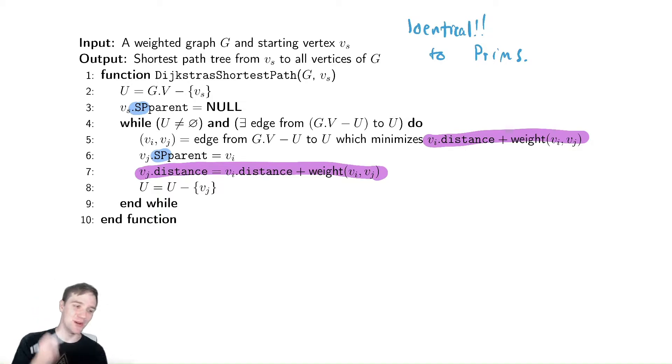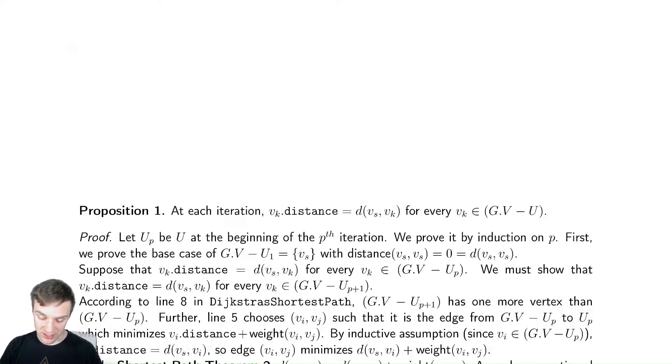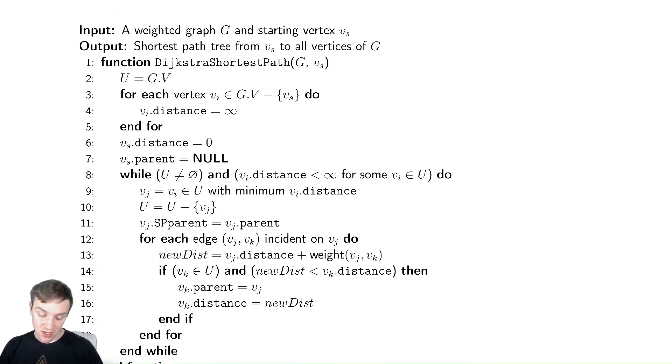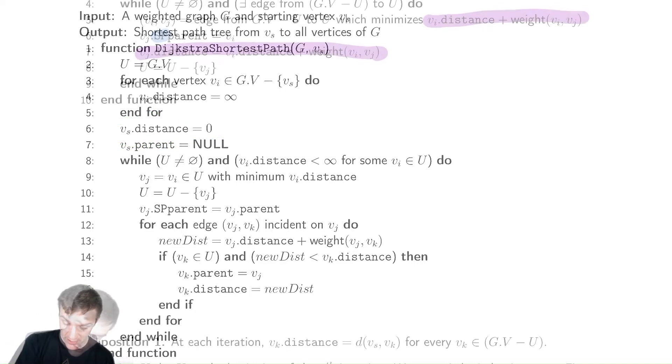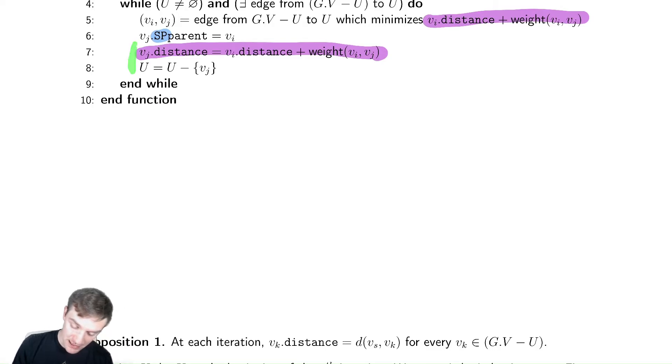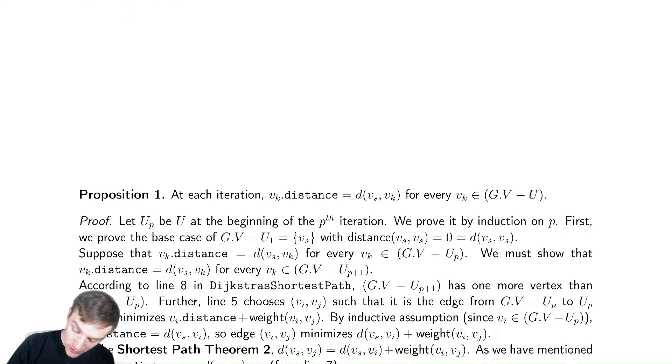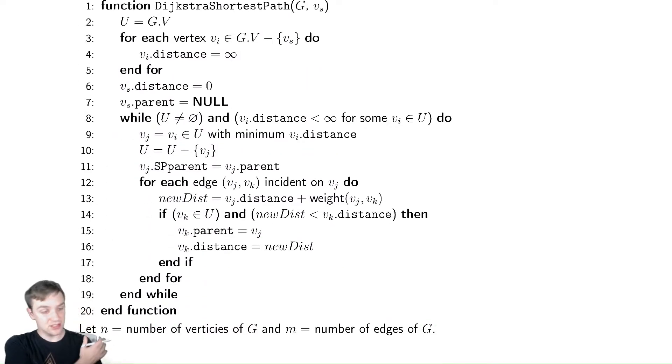And then just like we do with Prim's, we're going to modify the algorithm to make it more intelligent by storing additional information at the nodes. So instead of just recomputing the distance to every node, we are going to store the distance at each node. Rather than storing the distance only once we add it to the set G.V minus U, we're going to store the distance the whole time.